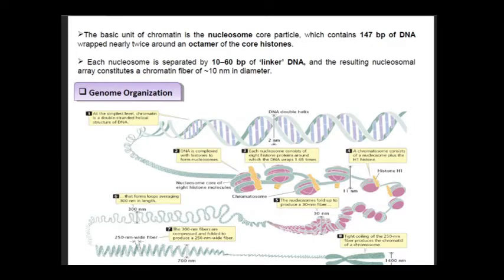Octamer means 8 proteins which are made up of 4 different proteins: H2A, H2B, H3, and H4. These 4 proteins are present as dimers and form the structure called an octamer. Each nucleosome is separated by 10 to 60 base pairs of linker DNA—it depends upon the condition and type of cell. The resulting nucleosomal array constitutes the chromosomal fiber of around 10 nanometers in diameter.